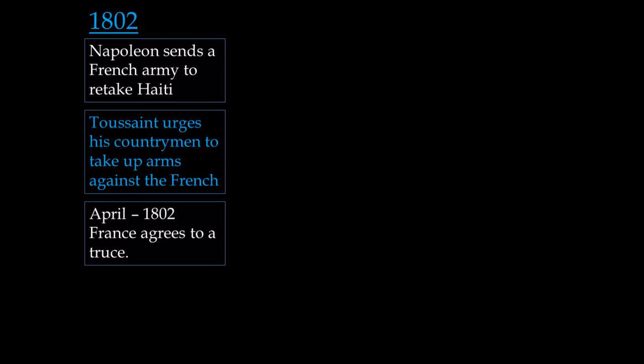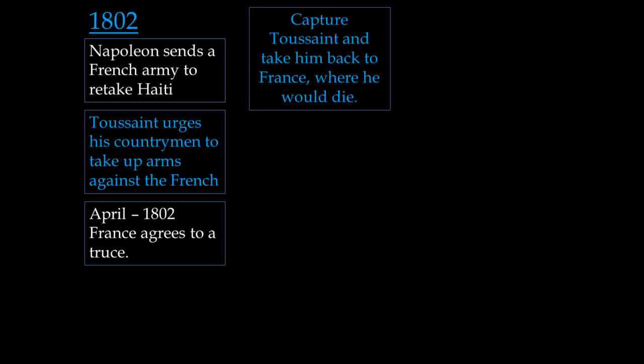In 1802, Napoleon, as leader of France, sends an army back over to Haiti to try to retake it. Toussaint urges his countrymen to take up arms against the French: 'We've overthrown them once — we shouldn't let them come back and re-enslave us.' Fighting goes on for a bit, but by April of 1802, France agrees to a truce, essentially giving up. However, before leaving, they capture Toussaint and take him back to France, imprisoning him where he would eventually die.